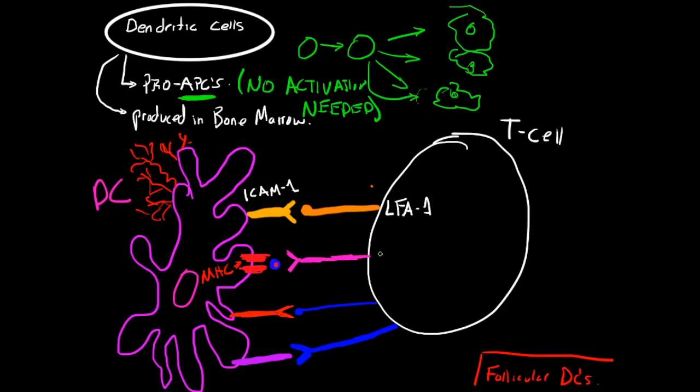You have your T cell receptor here, your MHC molecule. Then you have what's called B7 here, interacting with CD28, which is your second signal. And then you have CD40 interacting with CD40L here.